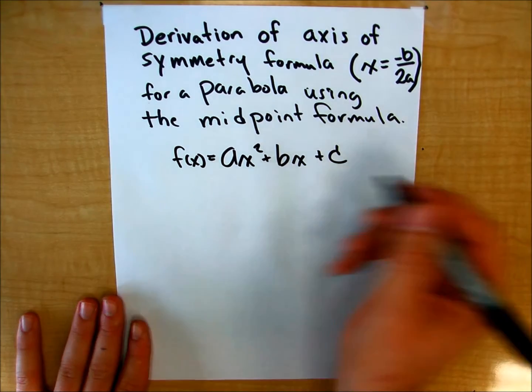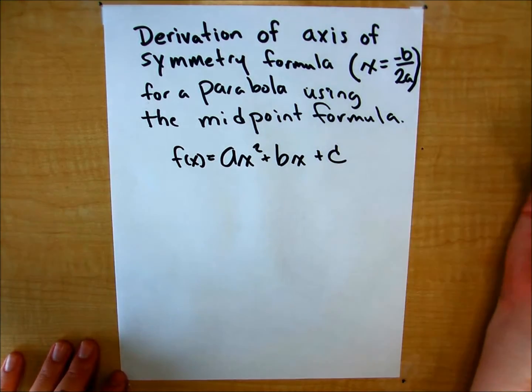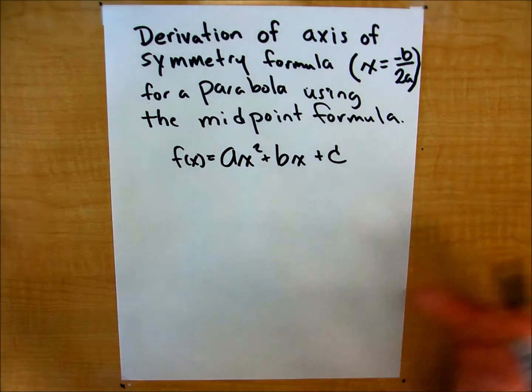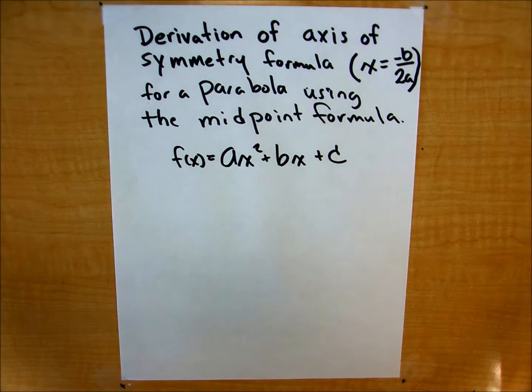You guys have learned that in order to find the axis of symmetry, which is basically a vertical line that divides the parabola into two congruent halves.